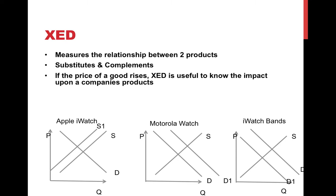Firms want to know this. Basically, if the price of one of their goods goes up, how dramatically will it impact the quantity demanded of their competitors' goods? And also, how dramatically will it impact the complementary goods that they also sell? How will this impact the revenue of their company? So this is useful for firms not only for predicting the sales of the one good in question, but also competitors' sales and complementary goods. Firms would want to know the XED concept to forecast how much revenue they would gain or lose.